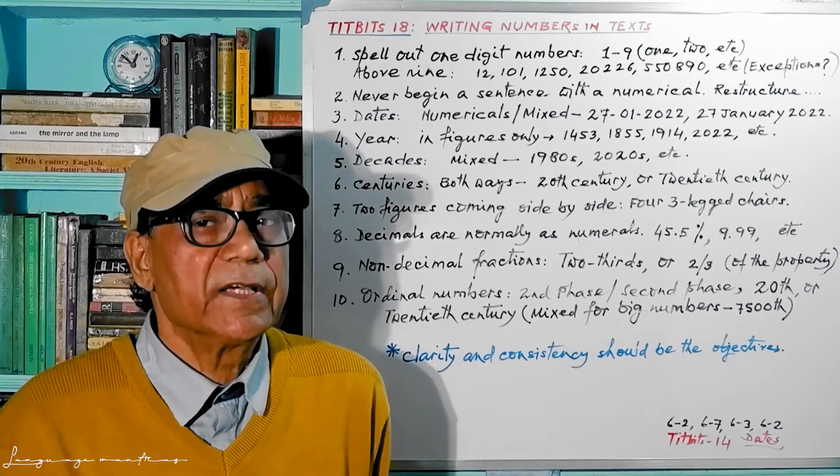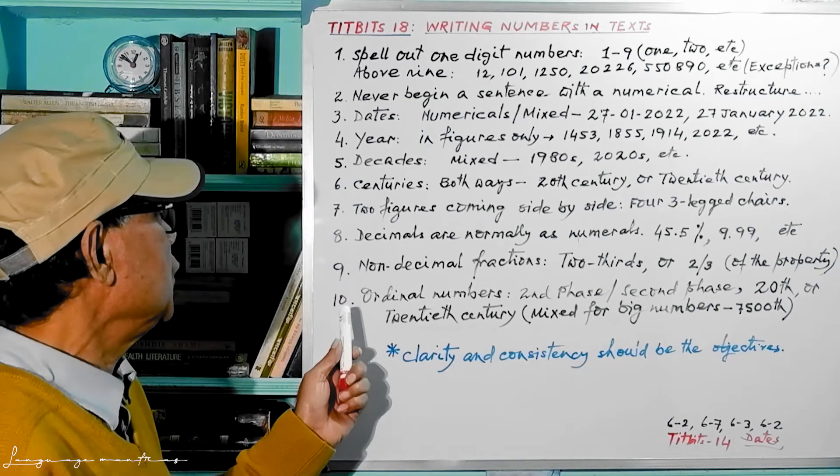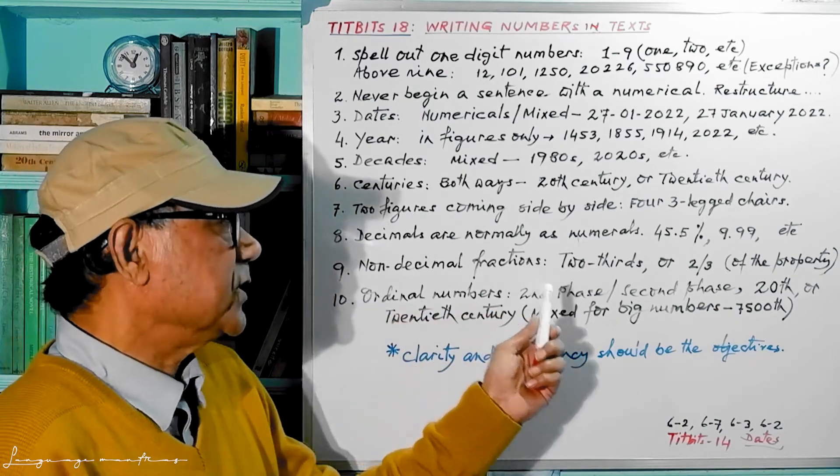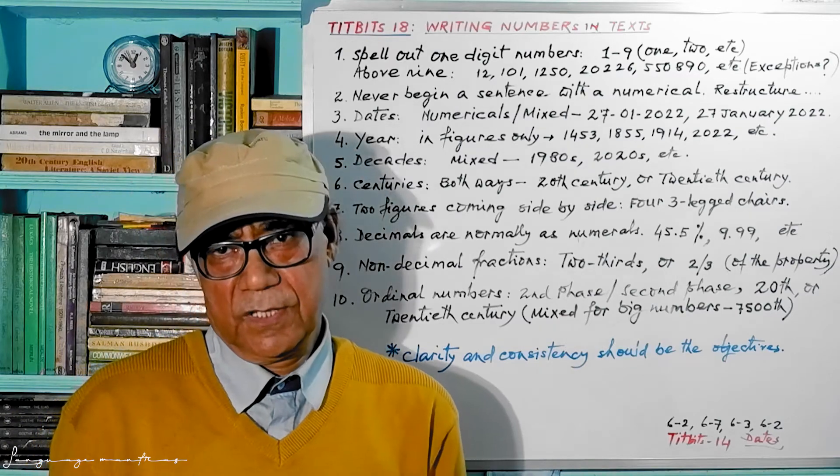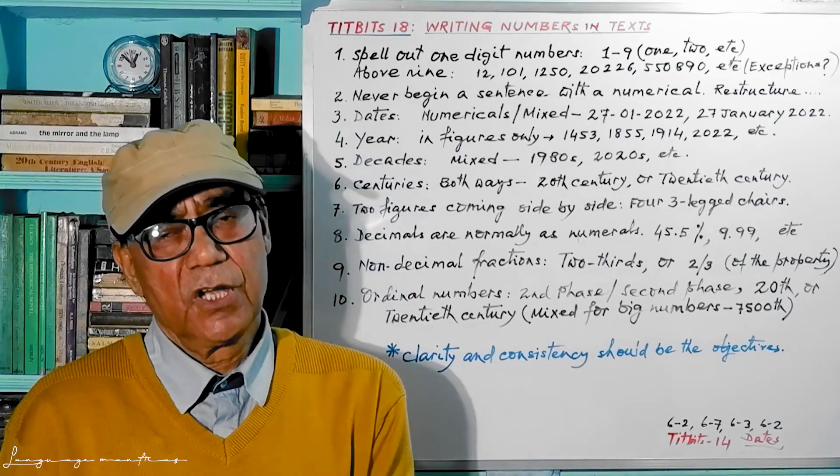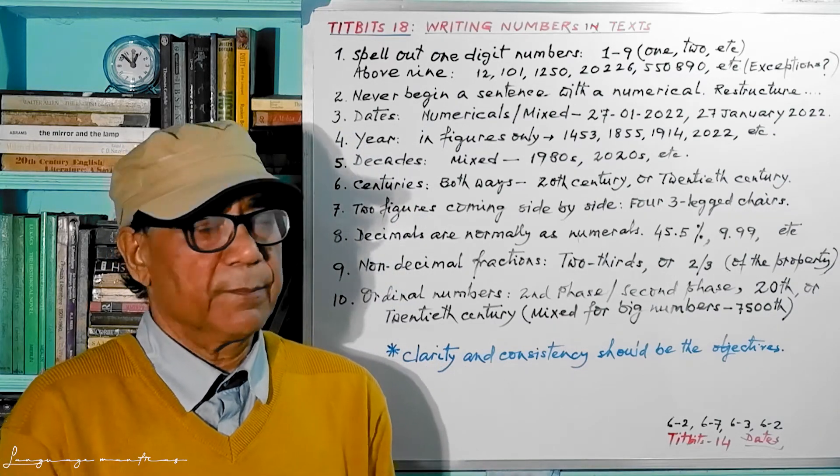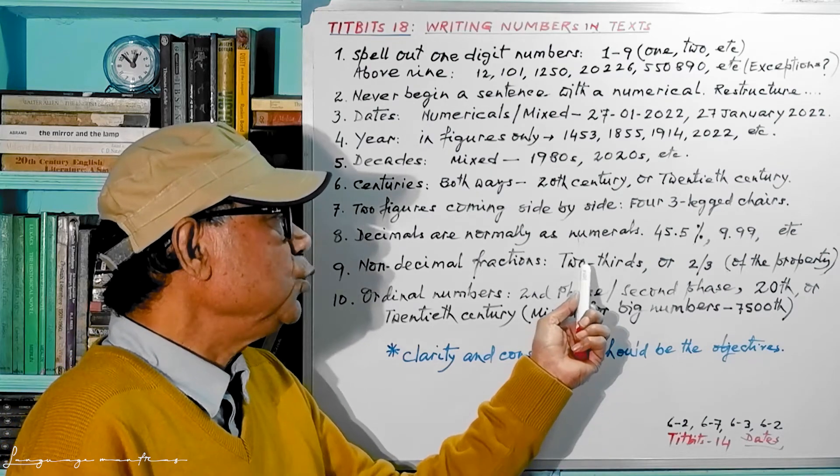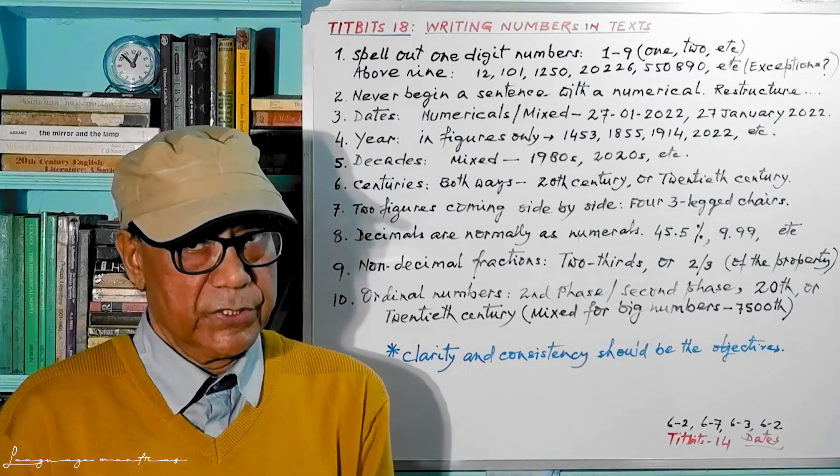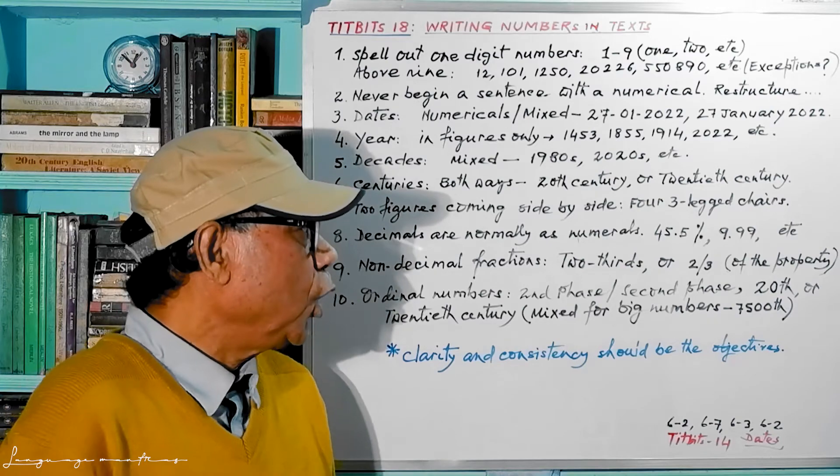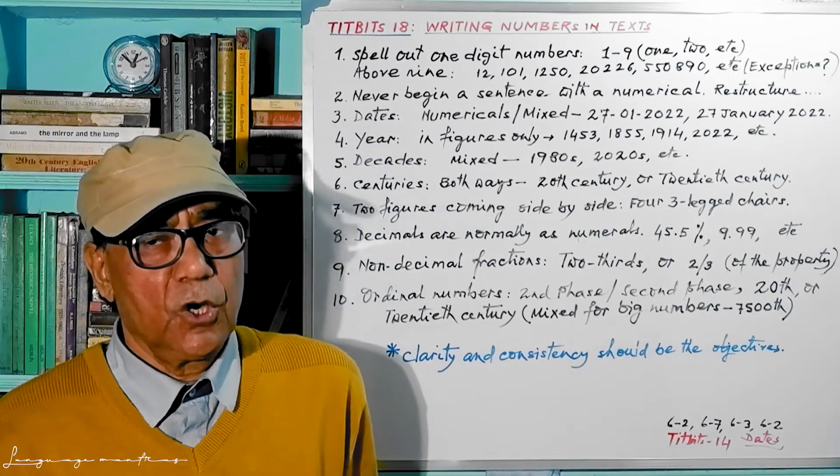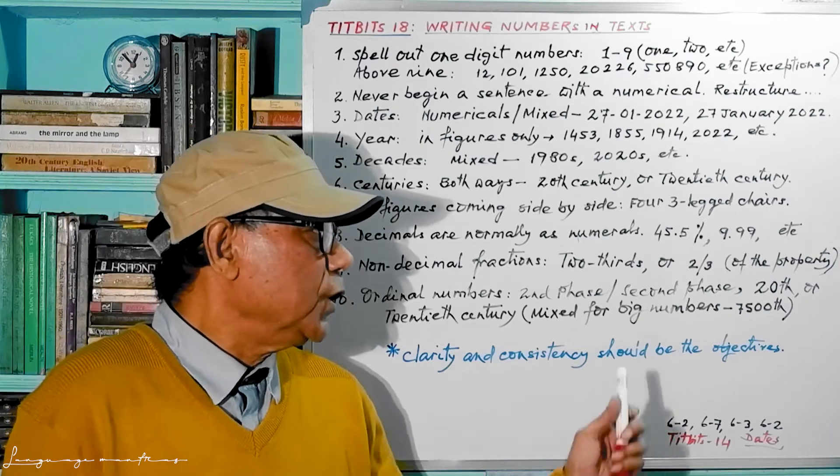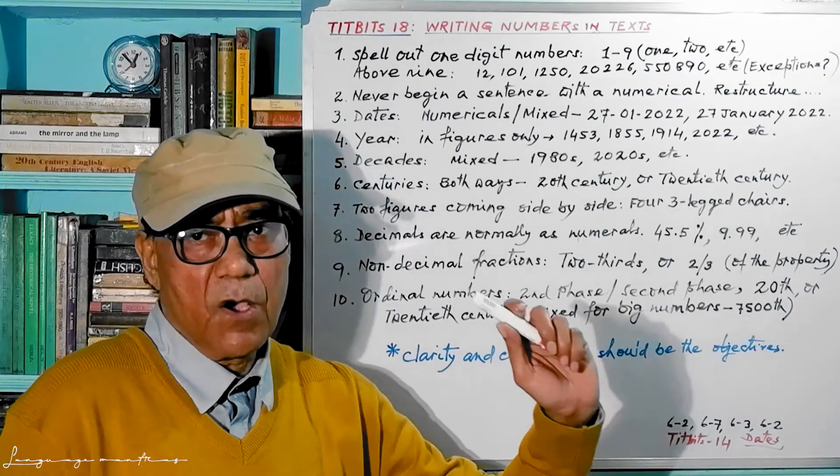Now come to non-decimal fractions. For example, two-thirds, that means three parts, two out of them. So two-thirds, two hyphen thirds in words is possible, or two slash three, or two by three, or two of three. So you can write this way.